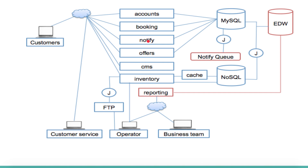The business also sends a lot of notifications via email related to offers, cancellations, or trip changes. These all interact with the notification API. I've created a separate API for notification so that any part of the system can use it to send notifications. Offers also play a major role — in e-commerce systems, a lot of offers are given during holidays or to promote the business. We have a dedicated offers API that any system in the company can interact with to send offers to customers.